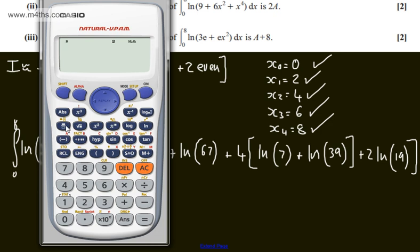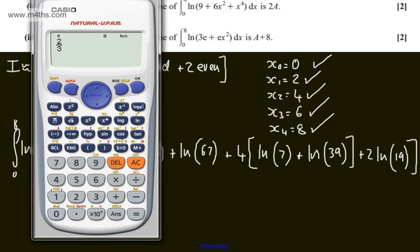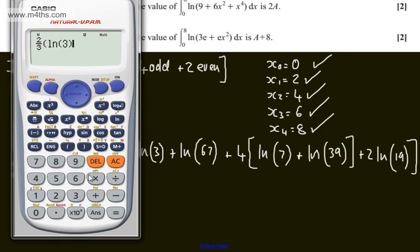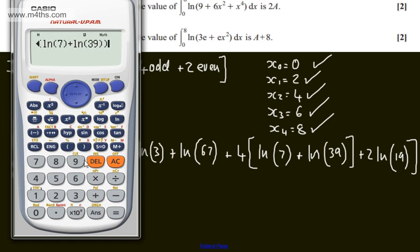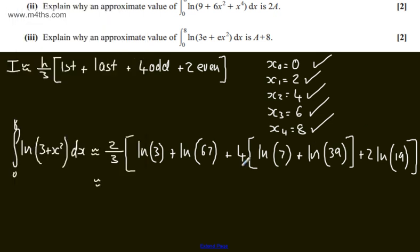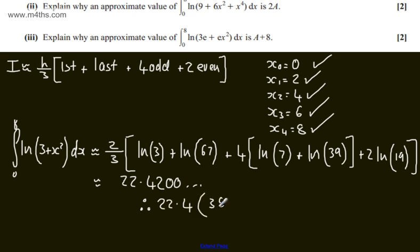So what we'll have is 2 thirds multiplied by: the natural log of 3, plus ln of 67, plus 4 lots of ln of 7 plus ln of 39, plus 2 lots of ln of 19. If we do that, that gives us 22.4200..., therefore this is going to be 22.4 to 3 significant figures.